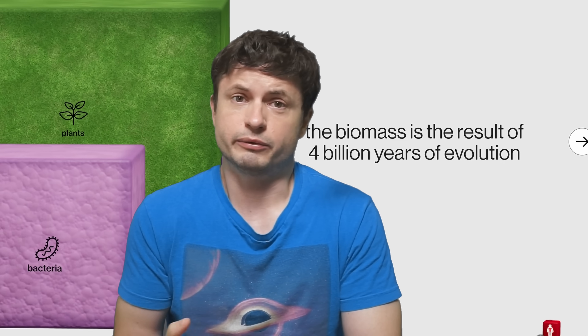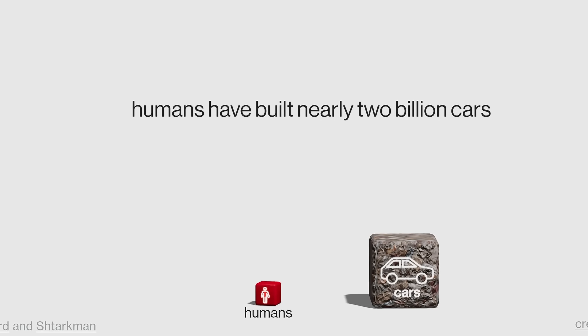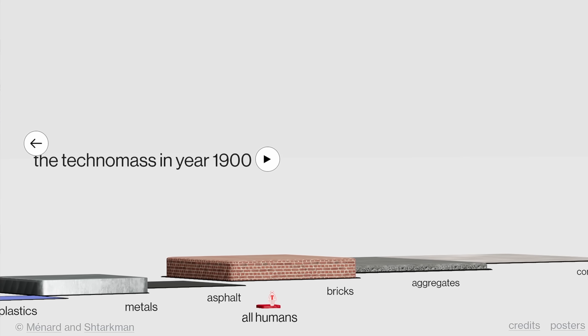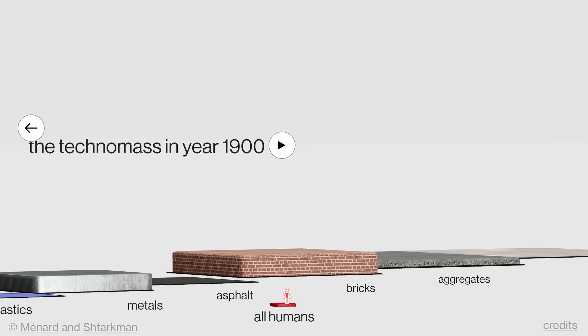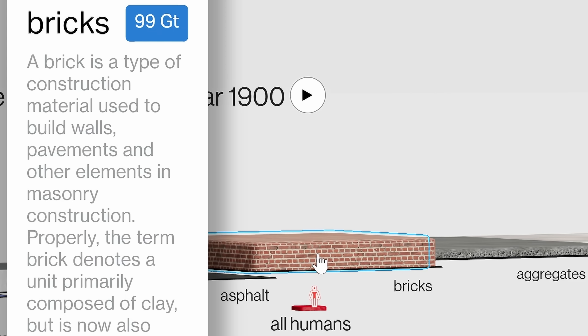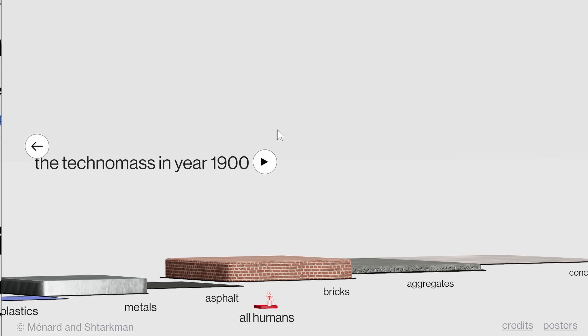Even though these bio-cubes are the result of 4 billion years of evolution, something else has been developing alongside them in the last 150 years — something to do with humans. There are roughly 15 times more cars by mass than there are humans. All of the cubes are now going to be changed into something that humans produced. It starts with the year 1900: there were only 1.6 billion people on Earth, but various advanced constructions had already begun — for example, there were already 99 gigatons of bricks on the planet. The next part shows us how all of this grows in the next 120 years.